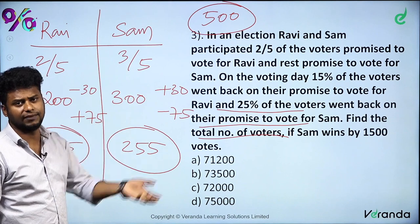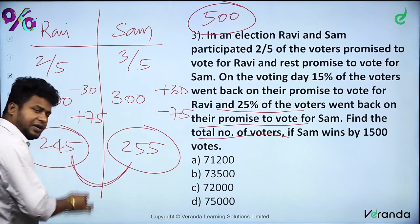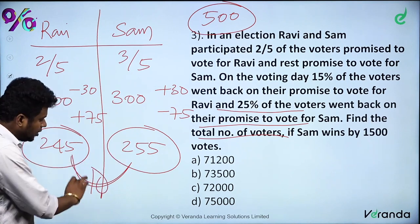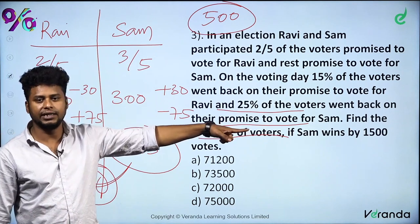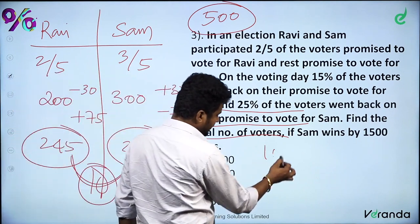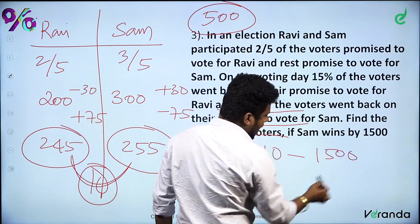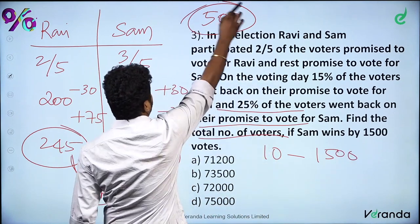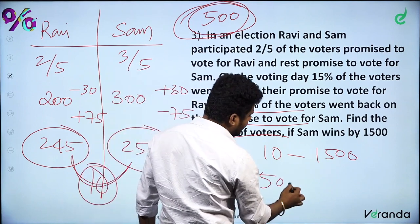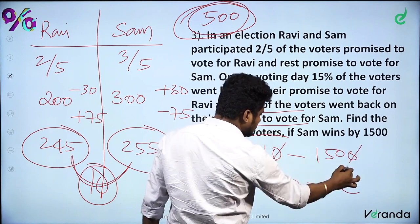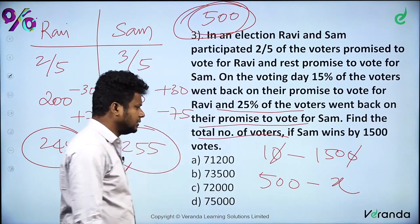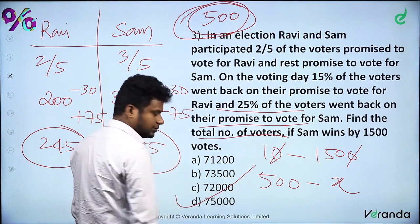Sam wins by 1,500 votes. The difference is 10 parts. So 10 parts = 1,500, meaning 100 parts = 15,000, and 500 parts = 75,000. After cancellation: 15 × 5 = 75, giving 75,000. The total number of voters is 75,000.